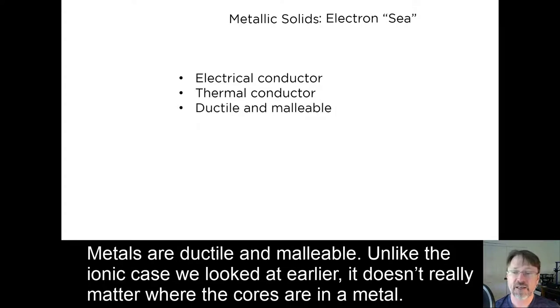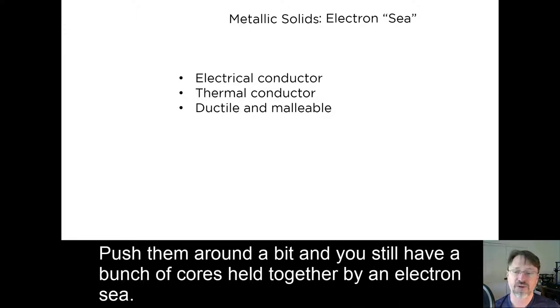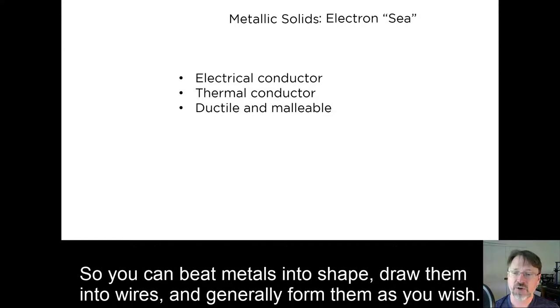Metals are ductile and malleable. Unlike the ionic case we looked at earlier, it doesn't really matter where the cores are in a metal. Push them around a bit, and you still have a bunch of cores held together by an electron sea. So you can beat metals into shape, draw them into wires, and generally form them as you wish.